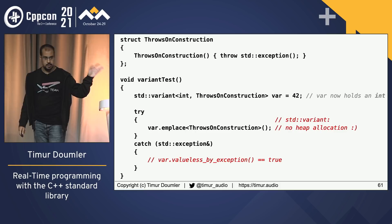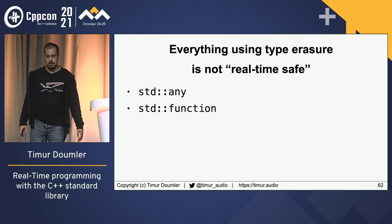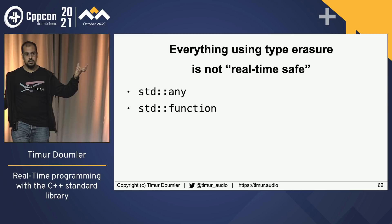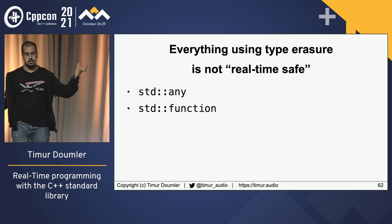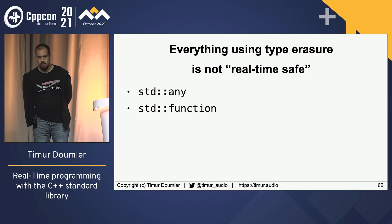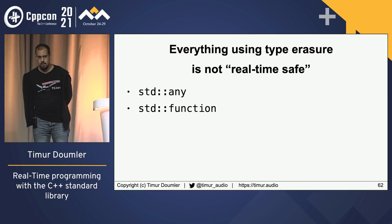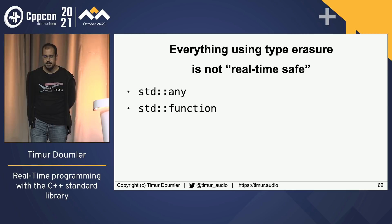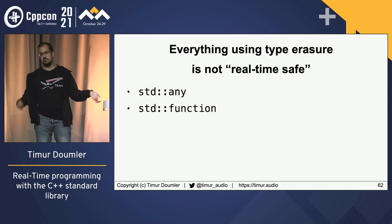Everything using type erasure is not real-time safe because it typically stores its content on the heap. std::any stores the underlying object on the heap — you might get a small object optimization but it's not specified or portable. std::function is the same — it allocates memory on the heap. std::function was supposed to be allocator-aware but that never really worked, and in C++17 the committee removed that support. There is a proposal for an 'in-place function' class — basically what static_vector is to std::vector — but it's not in the standard.